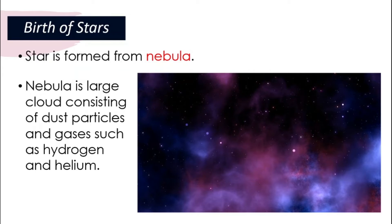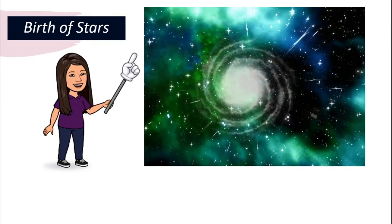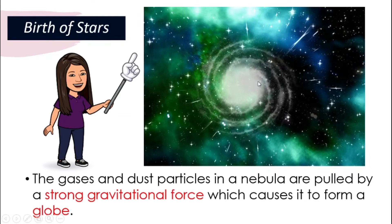Hydrogen and helium are two very important ingredients in any star. This cloud of dust, hydrogen, and helium gases will start to form something like a ball — a ball of gas. This happens because there is a very strong gravitational force that pulls all these gases and dust particles together, causing them to form a globe.